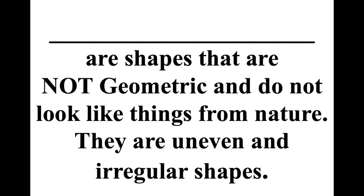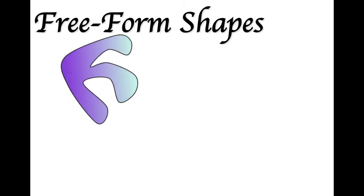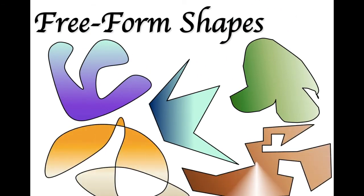The third group of shapes is for when you find a shape that you don't know what to do with. It does not follow a math rule, so we can't call it geometric. And it does not look like anything from nature, so we can't call it organic. We call these free form shapes — free form shapes are these weird, whacked-out shapes that don't follow math rules and don't look like anything from nature. So we've made a group of their own: free form shapes.